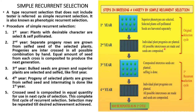Equal amounts of seeds from each cross are composited to produce the next generation. In the third year, the bulk seeds are grown and superior plants are selected and selfed, like in the first year.